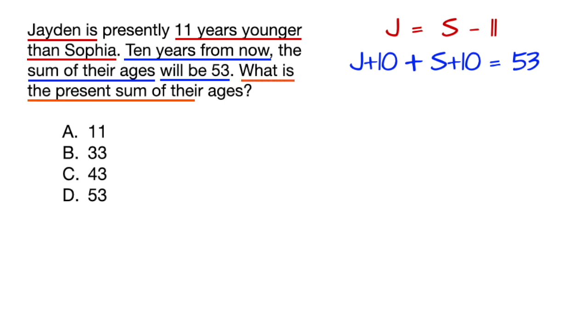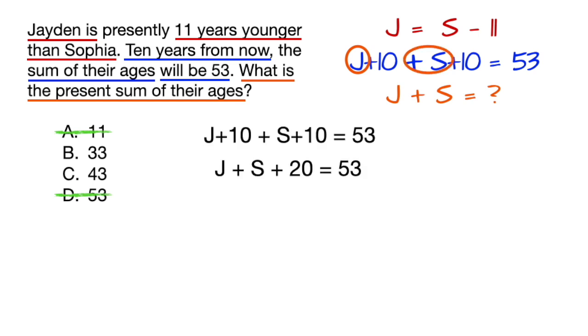What is the present sum of their ages, meaning solve for J plus S? Well, we can at least eliminate A and D, 11 and 53, since those are the exact numbers given in the questions. And we haven't even used the equations to solve anything yet. Now notice in one of the equations, we already have a J plus S, which is what we're solving for. So let's use that equation to simplify and solve for J plus S. Simple as that.